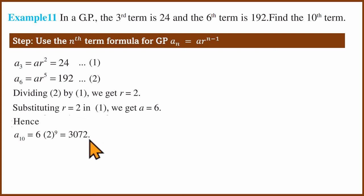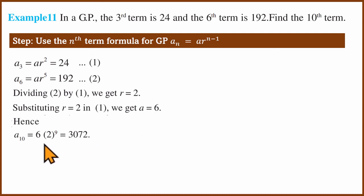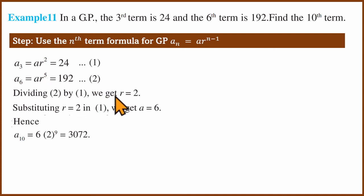In this example, you can follow the steps in the textbook to calculate and solve. You find r equals 2 and a equals 6, then solve for the 10th term. When some terms are given, form two equations, divide them to find r, then find a, and finally compute the required term.